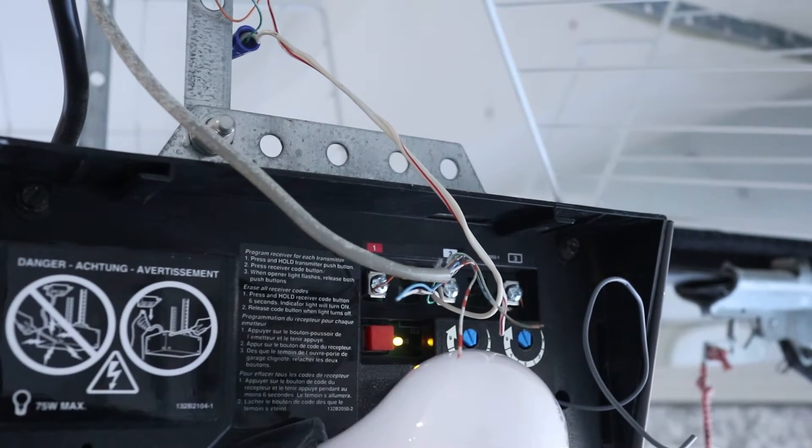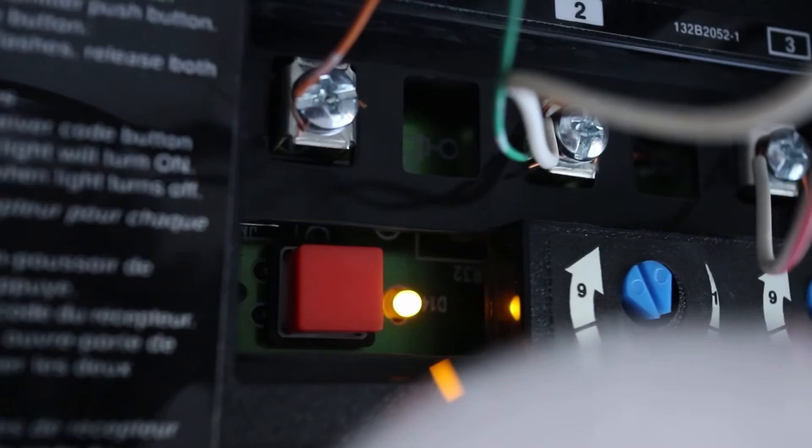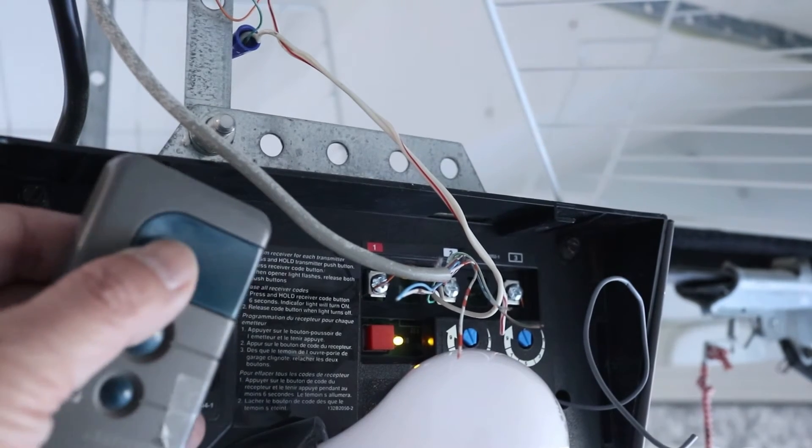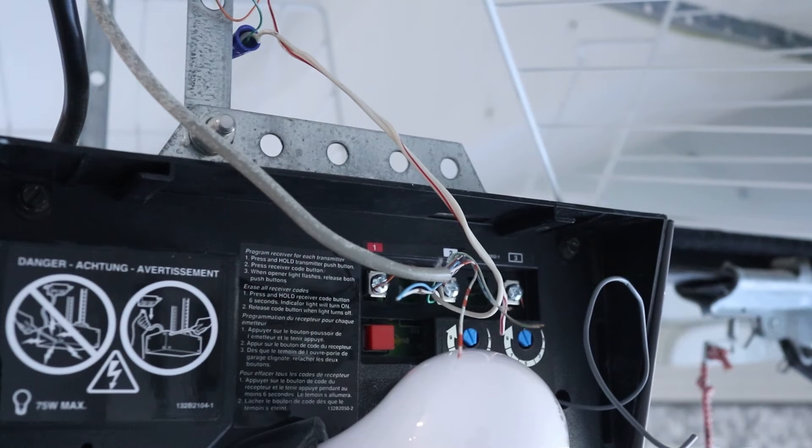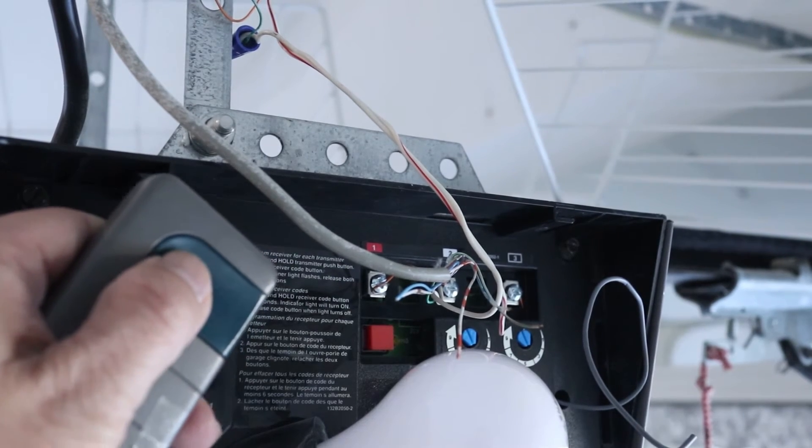Locate and press the sync button once on the motor housing. With the LED lit up, press and hold one of the buttons on the remote until the light bulb blinks once. That means programming was successful. And now my wireless remote will be able to open and close the garage door.